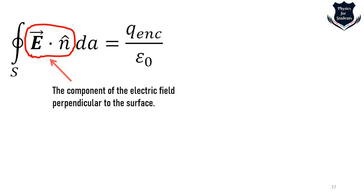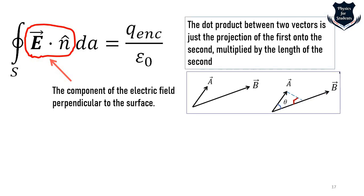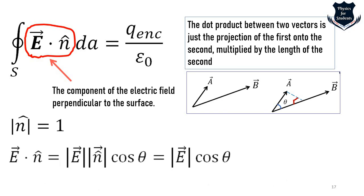The component of the electric field perpendicular to the surface comes from the dot product between E and n-hat. Since n equals one, E·n = E·cos(theta). This is why the dot product is used — it extracts the perpendicular component of the electric field relative to the surface.